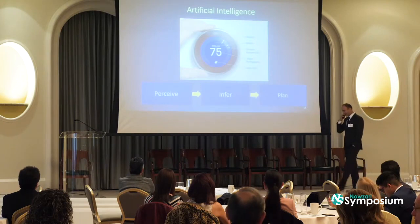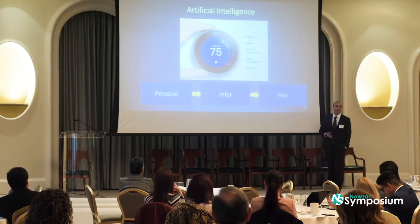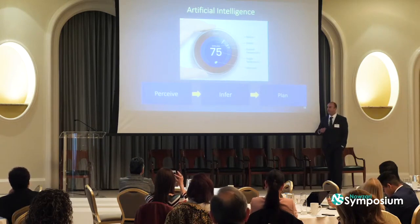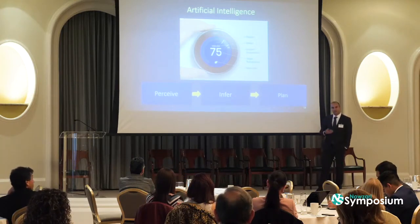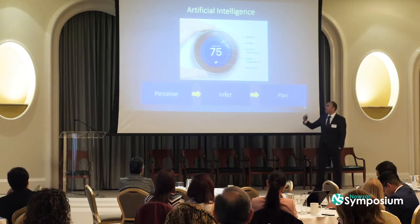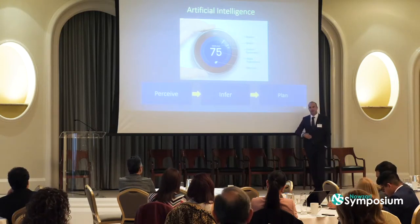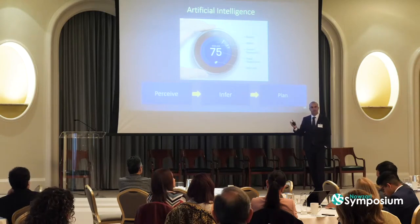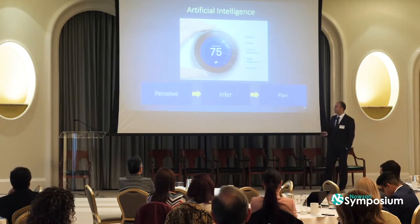Let's take a step back and talk about artificial intelligence. The simplest form of explaining artificial intelligence is that AI is a system that can perceive information from nature, have some inference model, and based on that inference model, try to act. The simplest form of AI is a thermostat at home — it senses the temperature, you set the inference model for the threshold, and when the temperature reaches that threshold, it either turns the AC on or off.